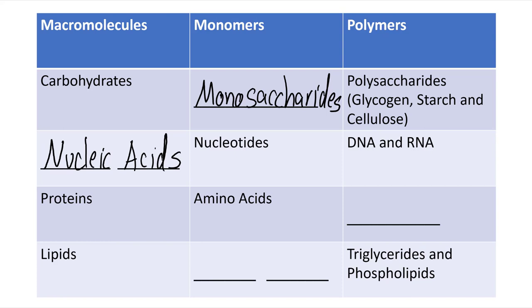For proteins, the monomers are amino acids, and the polymers are known as polypeptides.